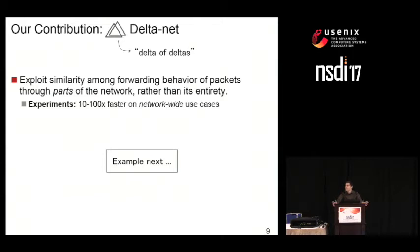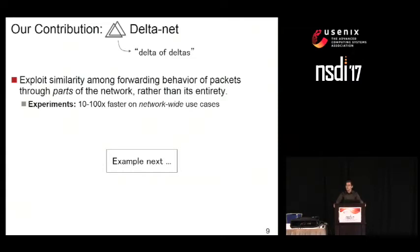In a sense, what this gives us is a second-order way of reasoning about incrementality — where it's not just about deltas, but about deltas of deltas. We exploit similarity among forwarding behavior of packets through parts of the network, and show through extensive experiments that DeltaNet makes it possible to check properties where the state of the art simply times out or takes much longer. But before we go there, I would like to illustrate the problem and our solution in more detail through a simple example.